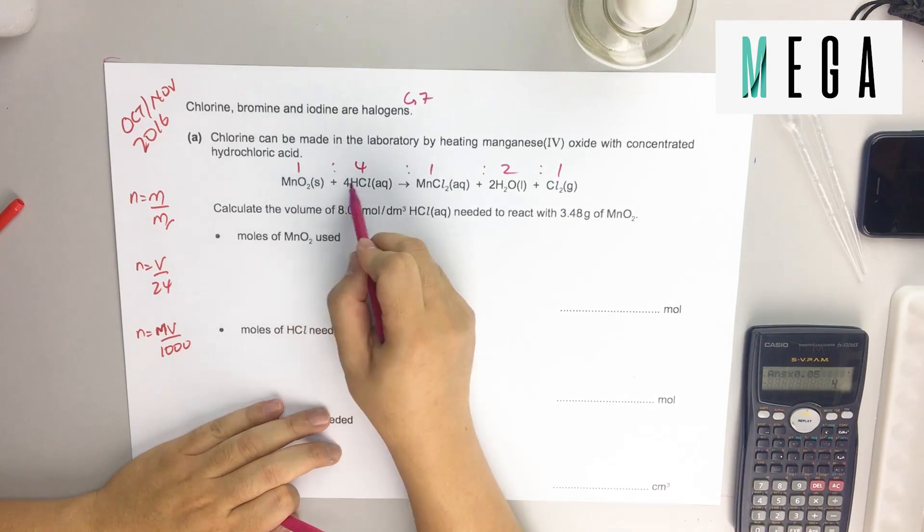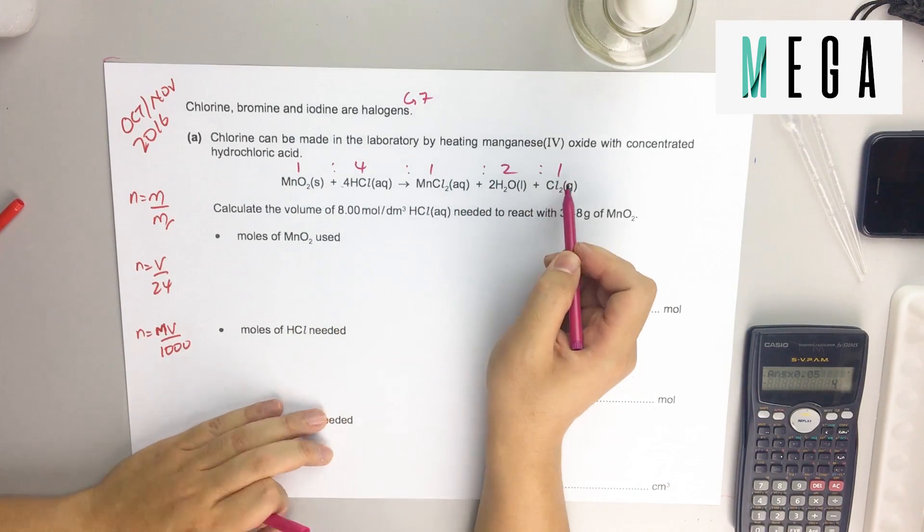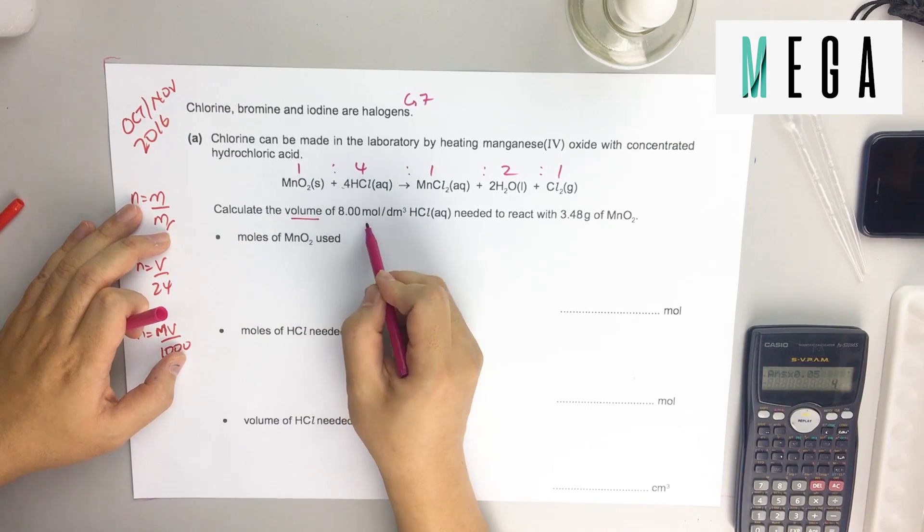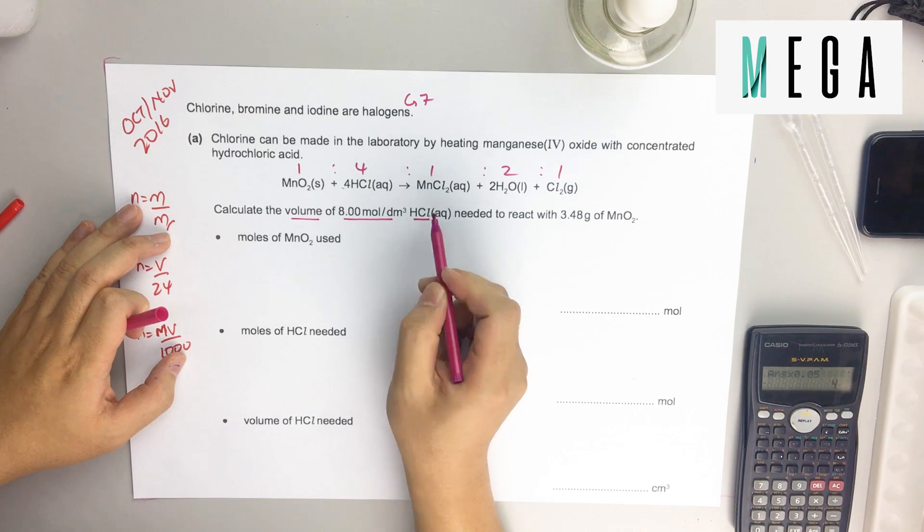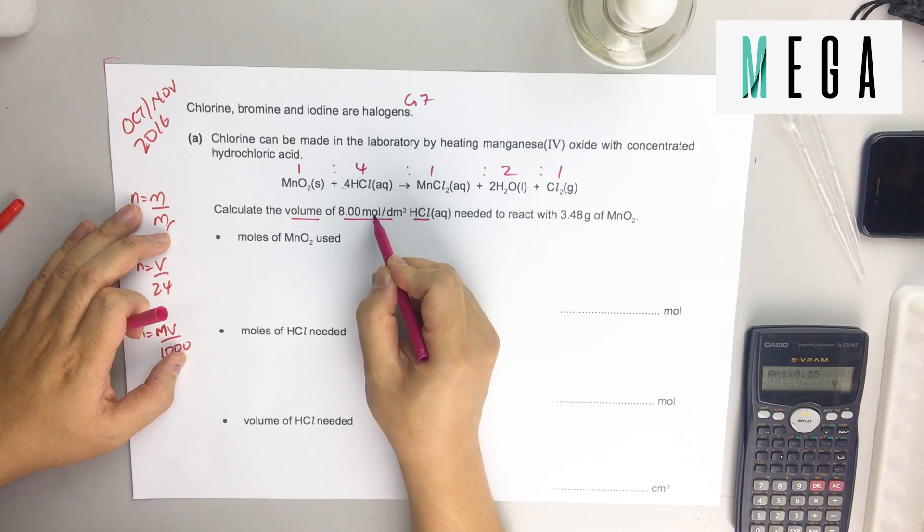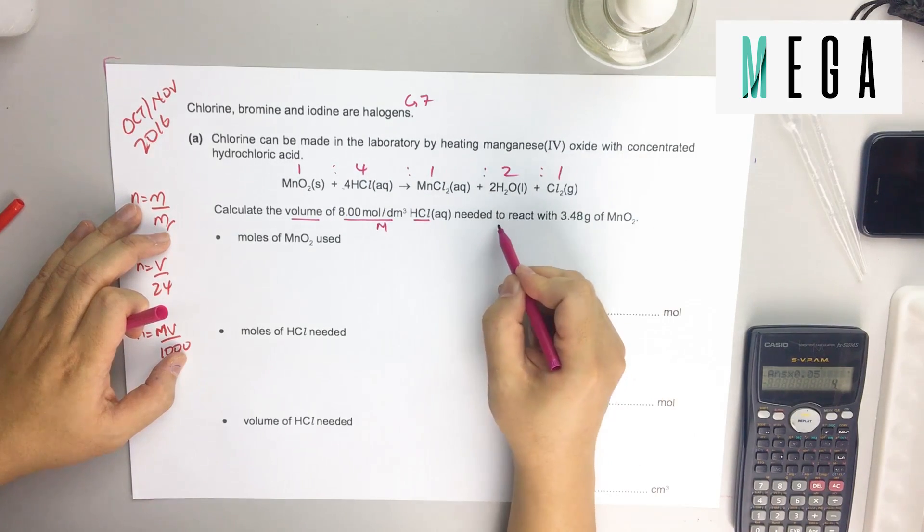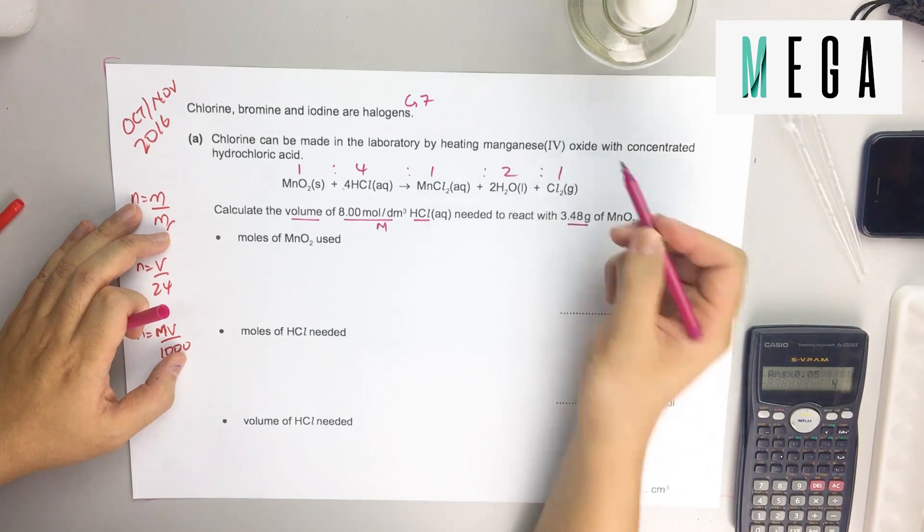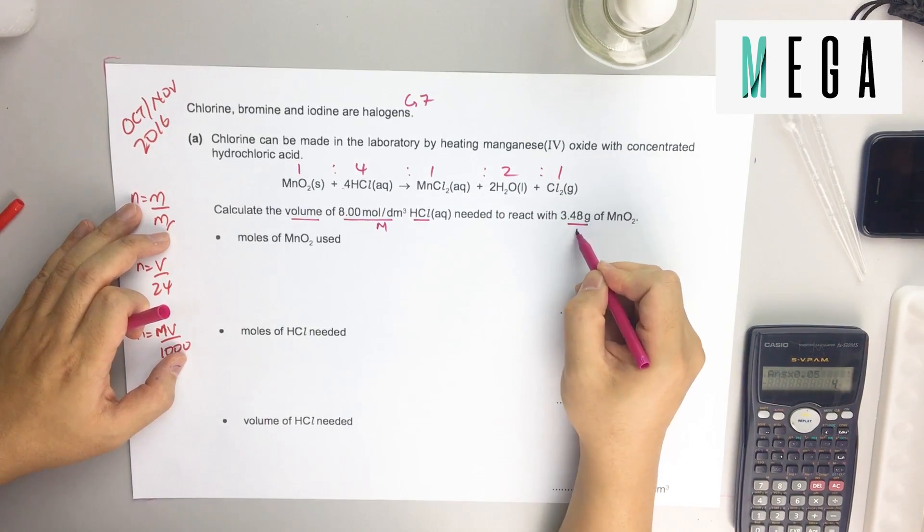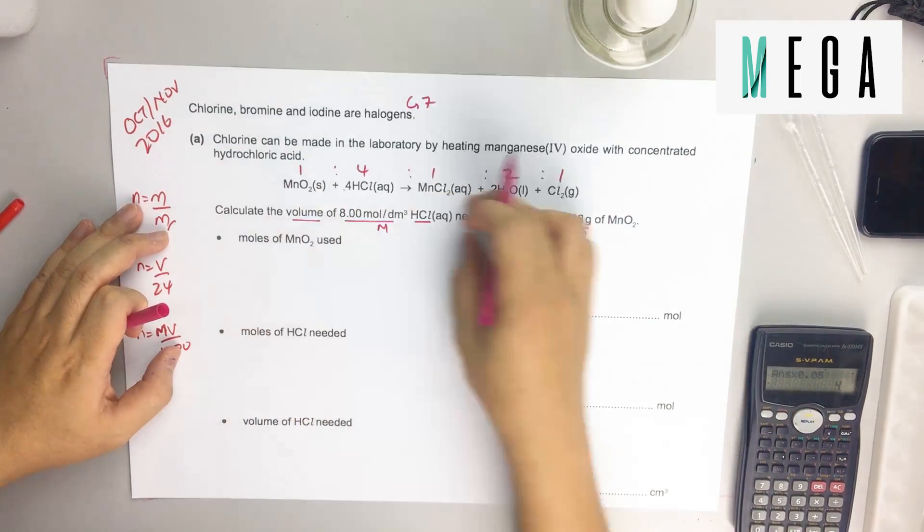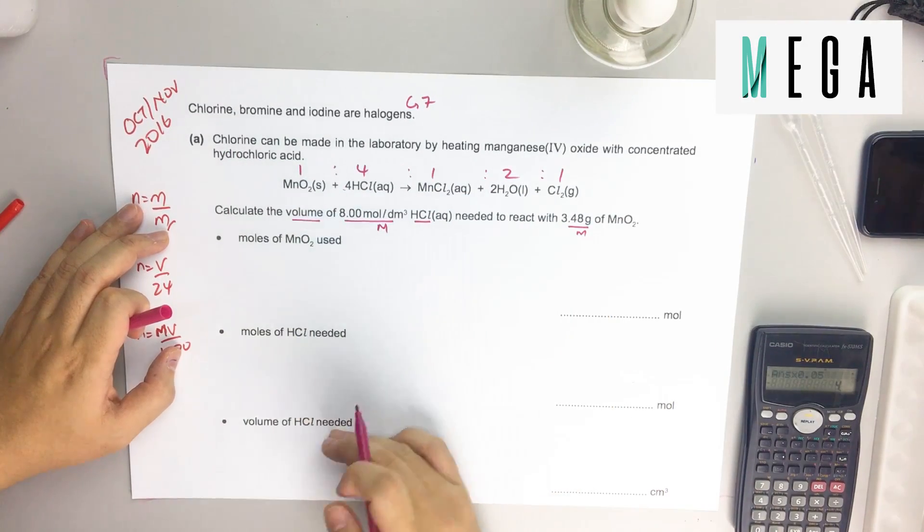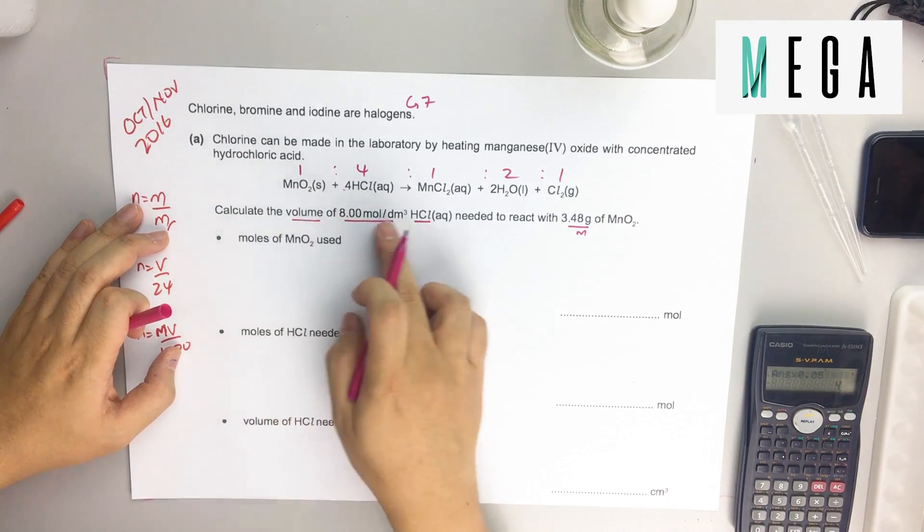So then they said calculate the volume of 8 mole per dm³ of HCl - when you see mole per dm³, put a capital M - needed to react with 3.48 grams of this manganese oxide (MnO₂). This is the question. Usually it tells you that after you finish all these steps, you get the volume. You see, volume is the output.